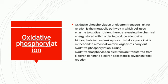Oxidative phosphorylation, or electron transfer phosphorylation, is the metabolic pathway in which cells use enzymes to oxidize nutrients, thereby releasing chemical energy to produce adenosine triphosphate. This takes place in mitochondria, and almost all aerobic organisms can carry out oxidative phosphorylation. During oxidative phosphorylation, electrons are transferred from electron donors to electron acceptors such as oxygen in redox reactions.